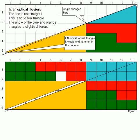Shown in this example, a straight line running down the blue triangle would not go to the corner if this was a true triangle.